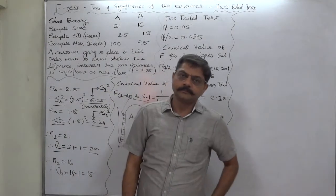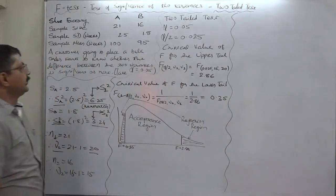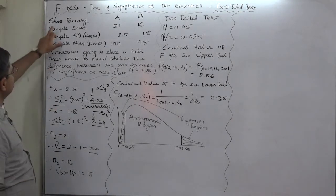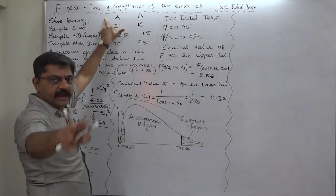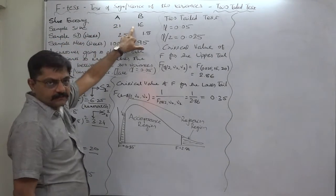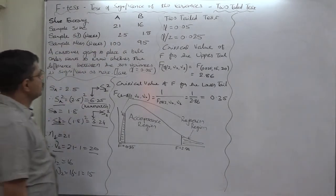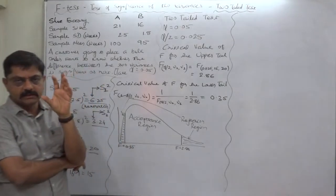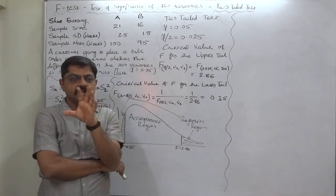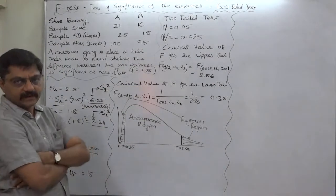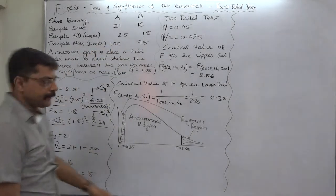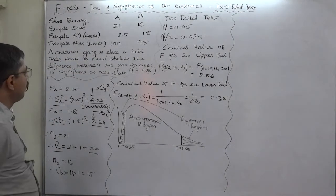Hello, namaskar and welcome. A new case in F-test: test of significance of two variances, and now we are with a two-tail test. Let's first read the case. Shoe factory A and B — there are two populations, factory A and factory B, manufacturing shoes. Sample size: A is 21, B is 16. Sample standard deviation in weeks: 2.5 and 1.8. This data is about the average life of the shoes produced by the two factories. Sample mean, that is mean life in number of weeks, is 195.